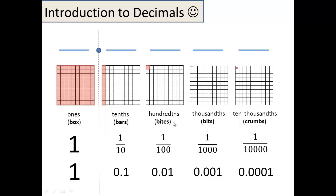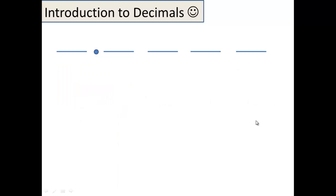Now we're just going to focus on these place names and see how well you can memorize them. So on this next slide I leave this blank, and I'm just going to be highlighting a place — I want you to call out the name of that place. Ready? What's that place? 1,000th is correct. I'm going to stop saying them — I'm just going to flash them on the screen. You've got to call it out as soon as you know it. Go ahead.